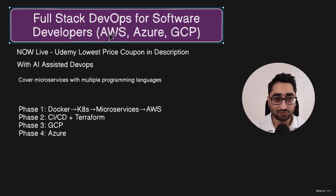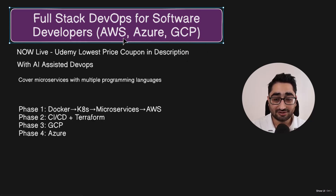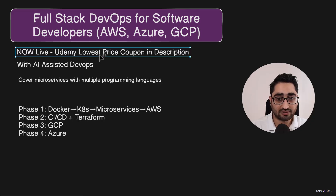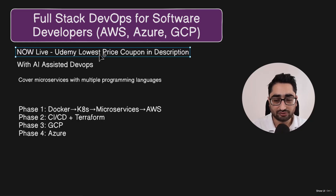The course name is, like you see on the screen, it's Full Stack DevOps. It covers multiple clouds — it's a multi-cloud course for AWS, Azure, and GCP by Google. This course is already live and you will find the lowest price coupon, which is a launch discount, available in the description below. It is available for a limited period of time, so be sure to check the description if you wish to enroll.